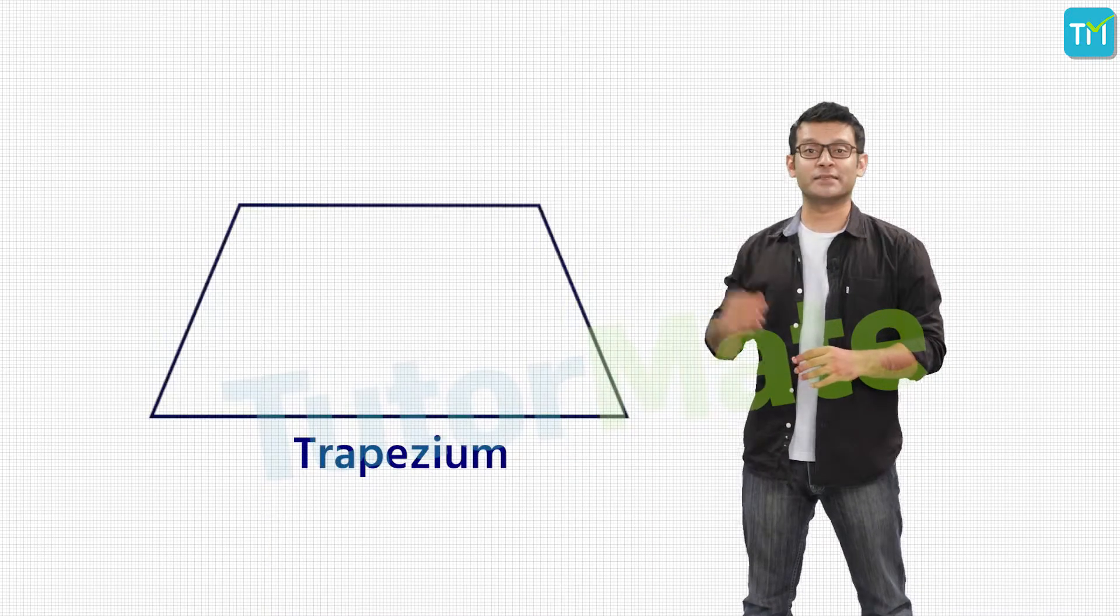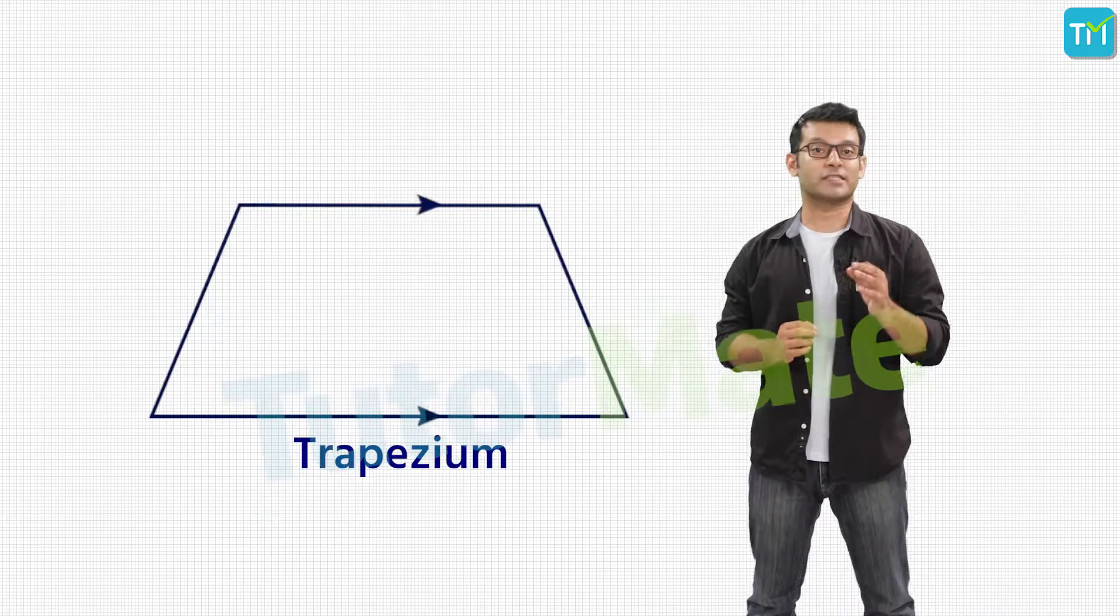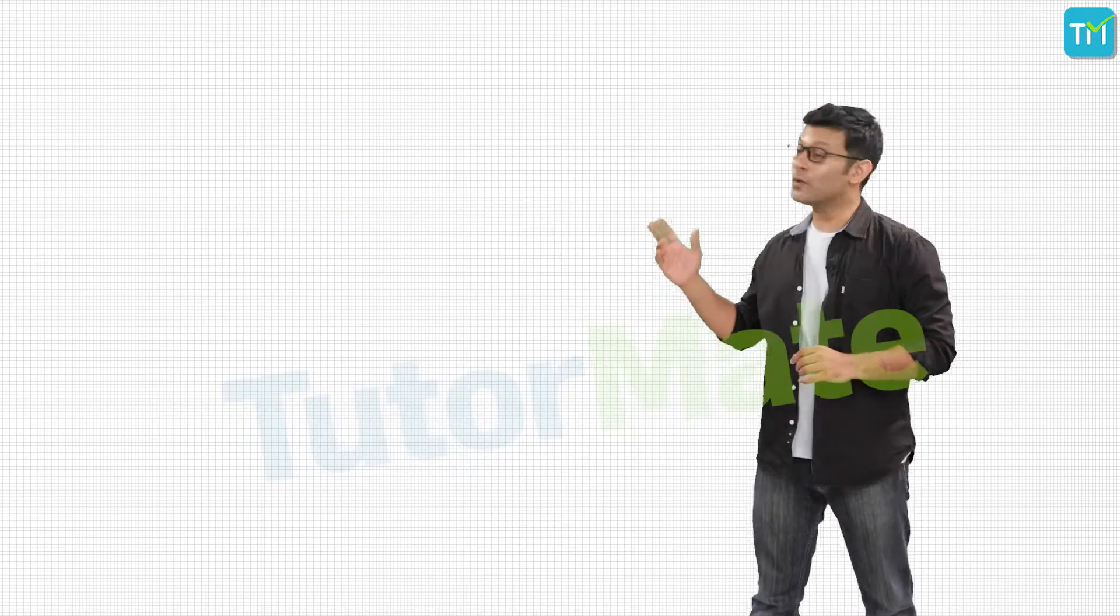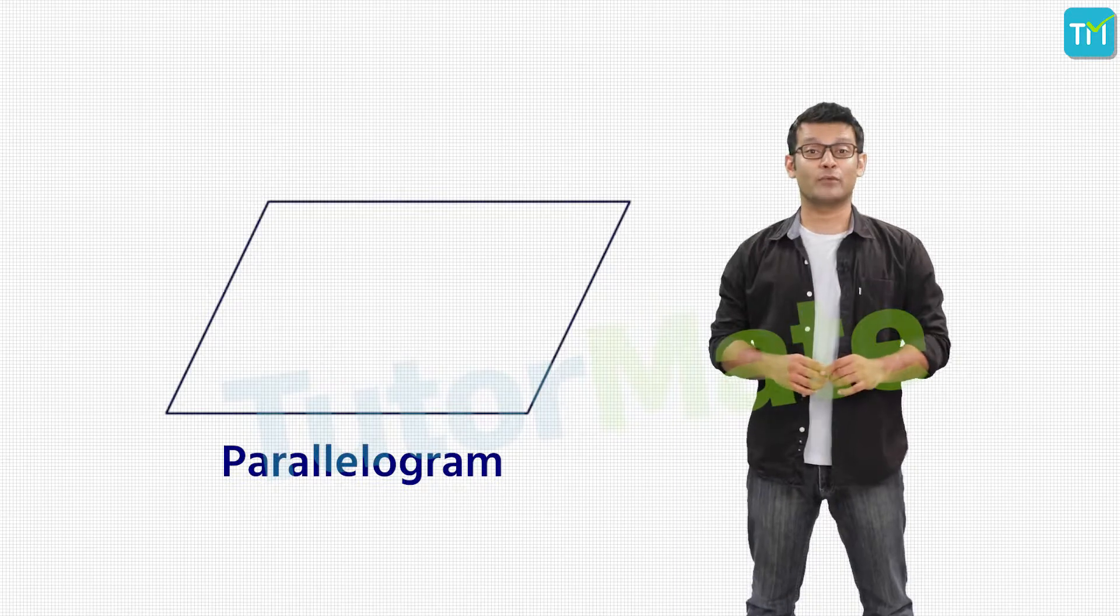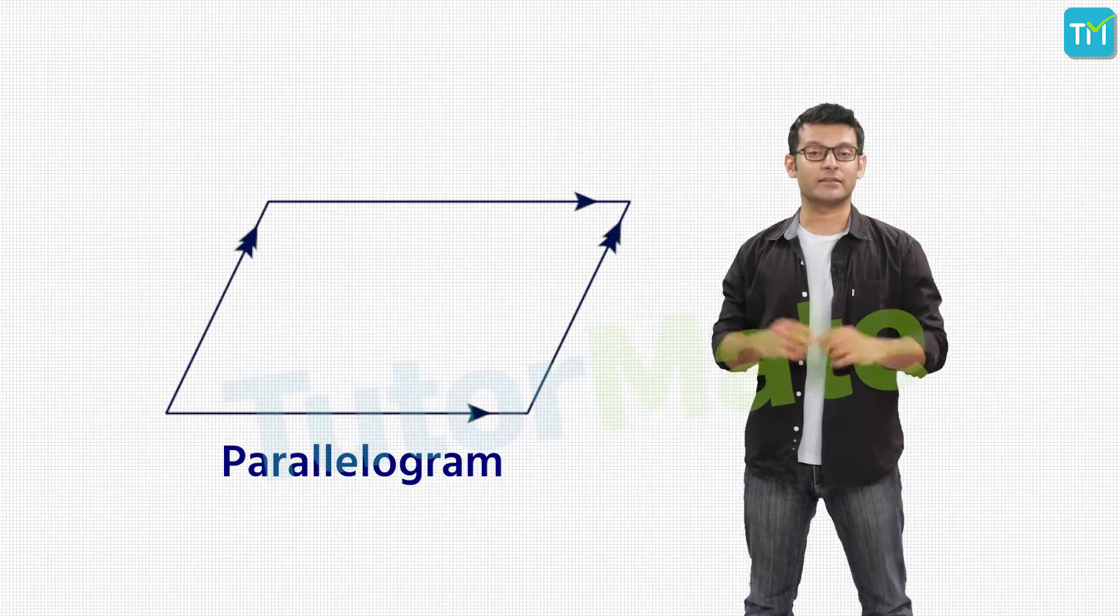First, we have the trapezium. In this type of quadrilateral, one pair of opposite sides is parallel to each other. Next, we have the parallelograms, where both pairs of opposite sides of the quadrilateral are parallel.